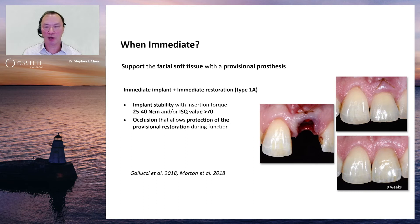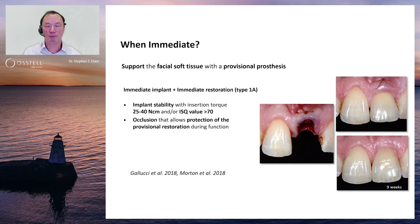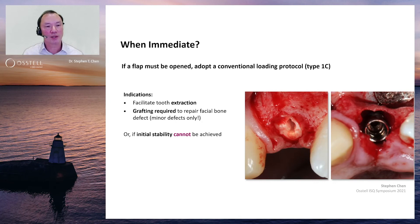With these protocols, a favorable occlusion is needed so the provisional prosthesis can be protected. Deep bite situations or non-compliant patients who won't follow instructions are situations where a Type 1A approach — immediate implant and immediate restoration — might not be the best way to proceed.